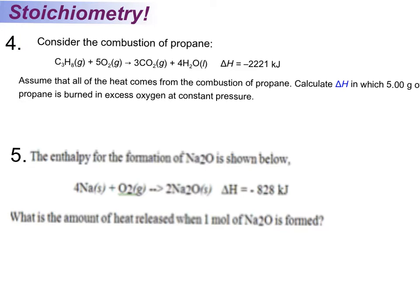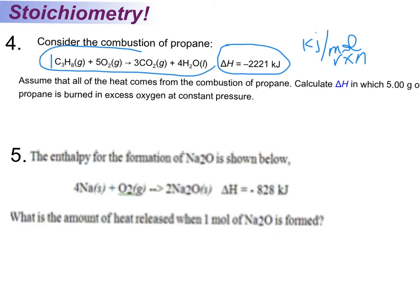If you look at this first example, it says consider the combustion of propane, and it gives you the balanced equation for propane, and if you notice there is a delta H value next to that. This delta H value is the amount of energy that's released, because it's exothermic, when the combustion of propane happens, and specifically when one mole of propane is combusted. The units we prefer to use on AP problems is kilojoules per mole of reaction — so for every one mole of this whole reaction, we give off negative 2,221 kilojoules.